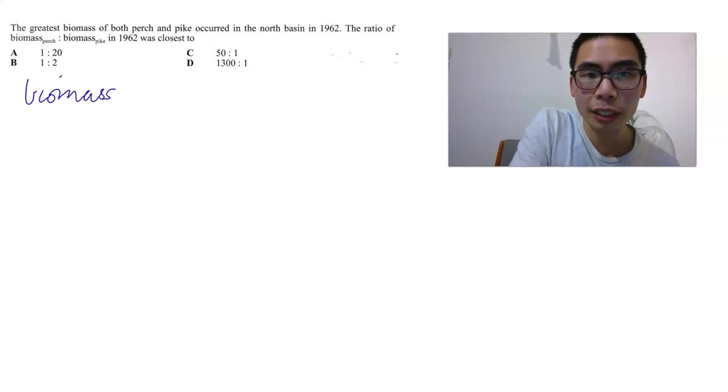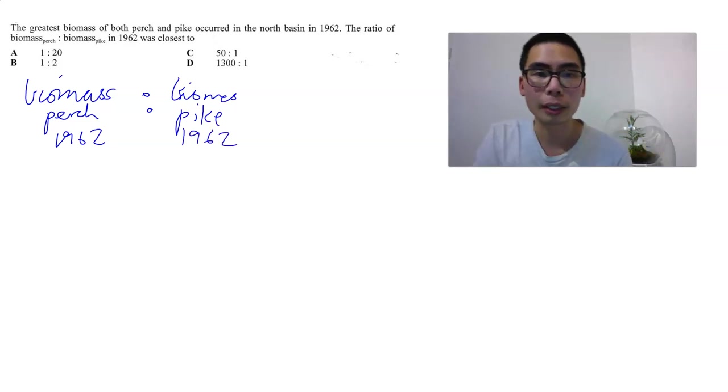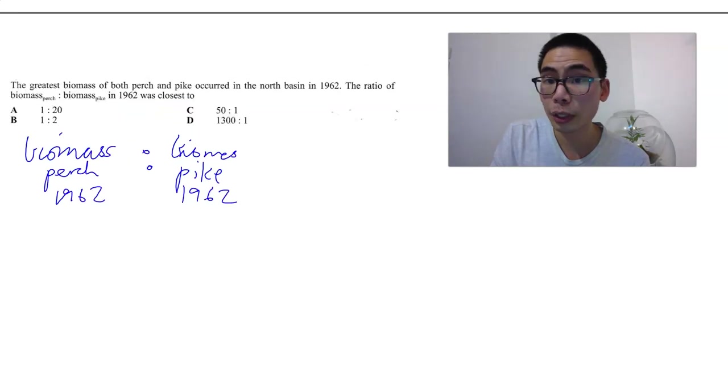So let's write down the ratio. While they've already done this, it's a good habit to get into. Biomass of perch in 1962... this is the biomass of pike. I can't write. But you get the idea - the biomass of pike and the biomass of perch in 1962. Let's quickly go ahead and have a look.